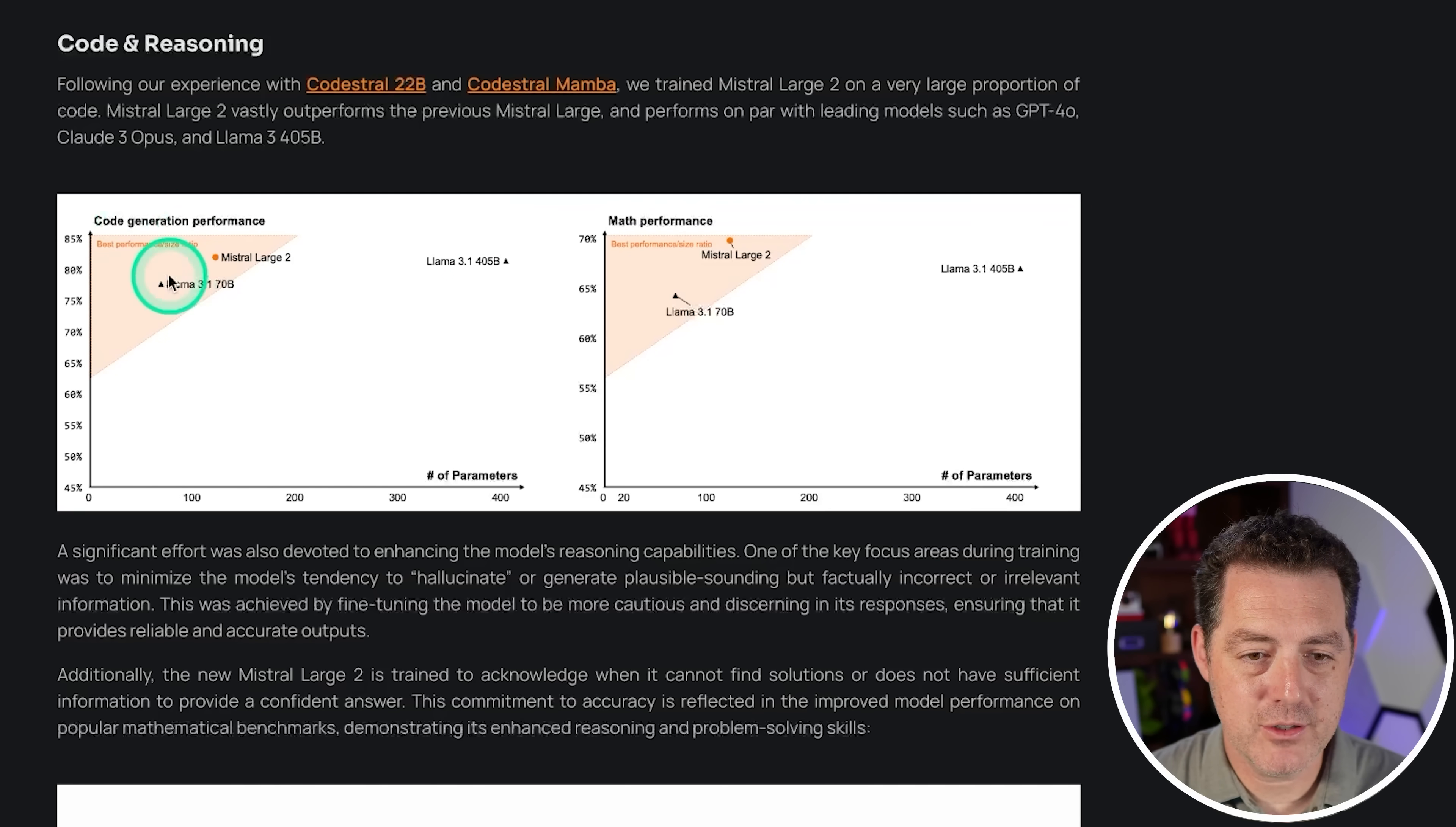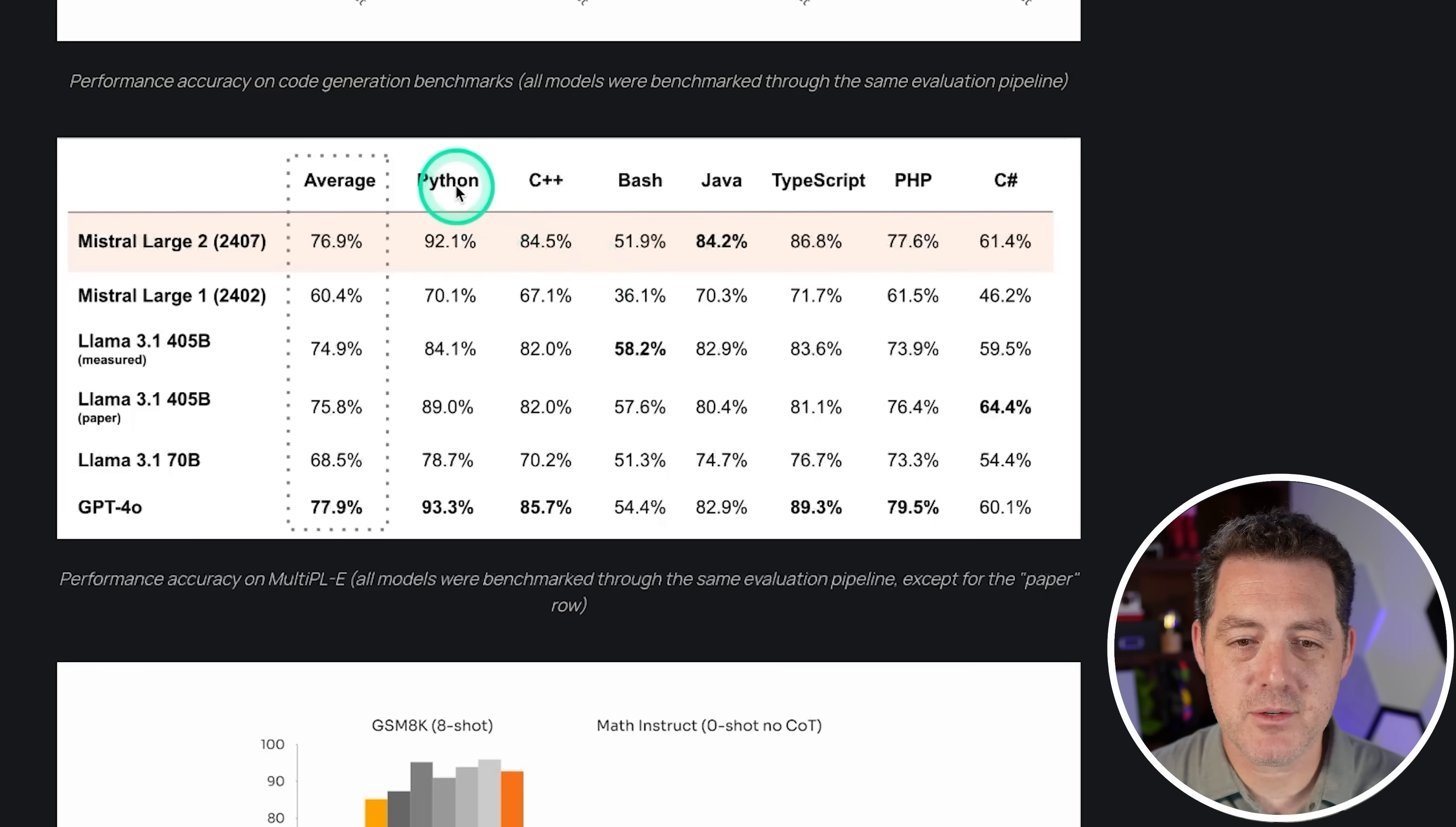Mistral Large 2 vastly outperforms the previous Mistral Large and performs on par with leading models such as GPT-4, Cloud 3 Opus, and LLAMA 3.1 405B. Now, if we look at this chart, we have code generation performance on the left, and it seems about the same as LLAMA 3.1 70B, a little bit better, and even closer to LLAMA 3.1 405B, but it is a much smaller model. Same with math performance. Mistral Large actually has a much better score than 70B and a decently better score than 405B.